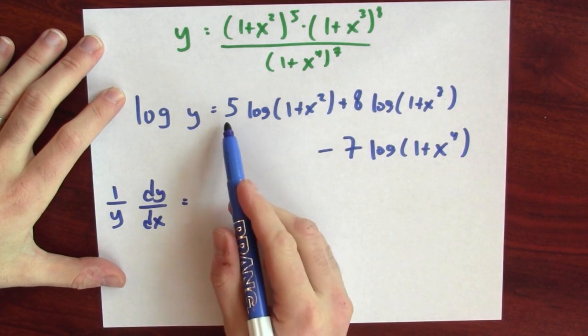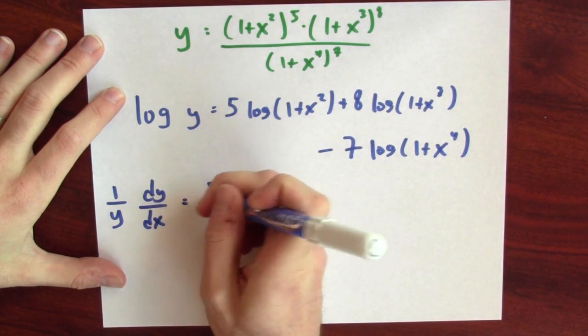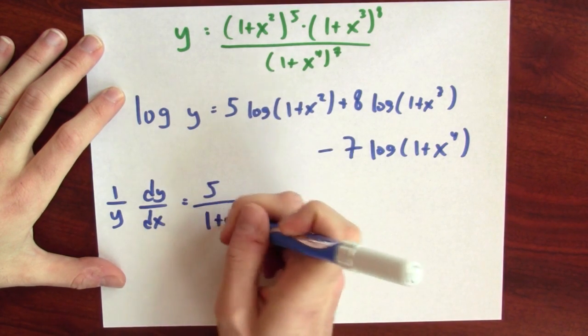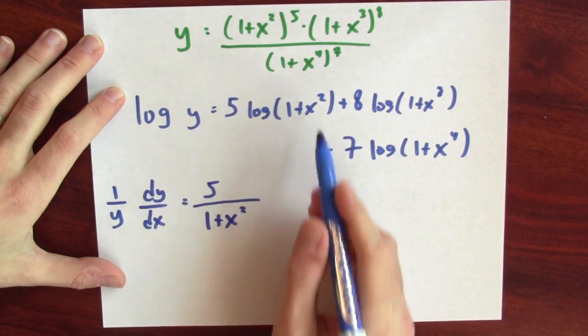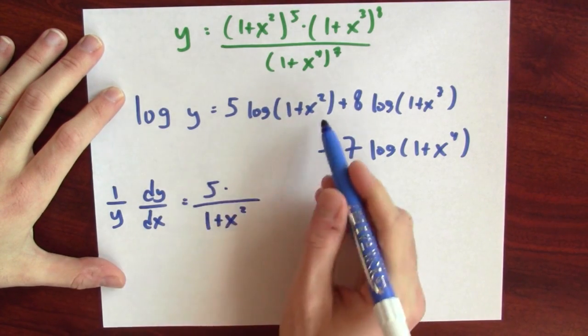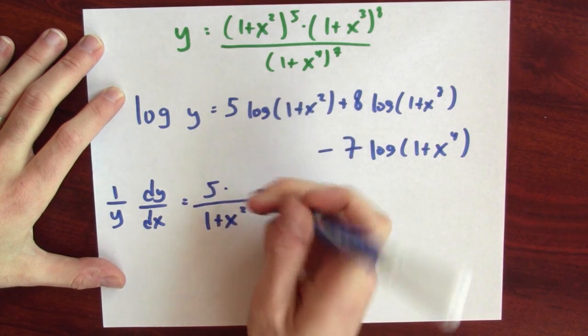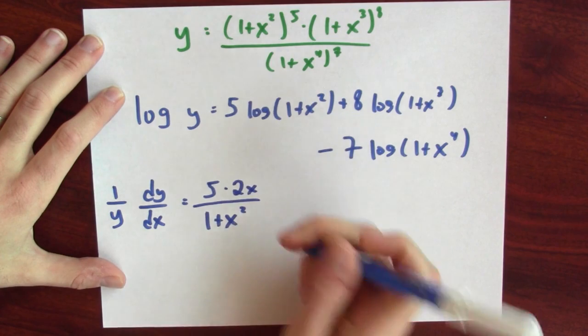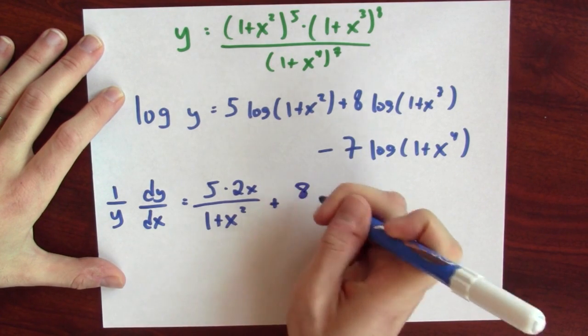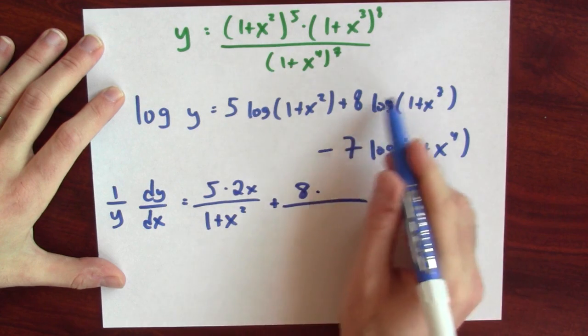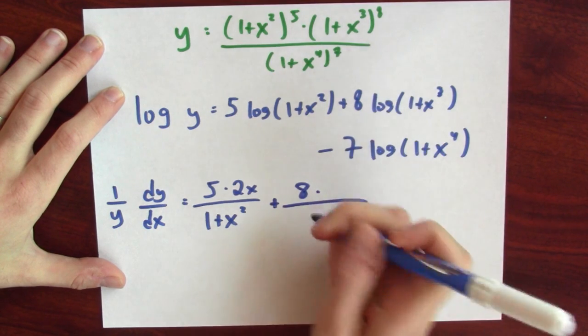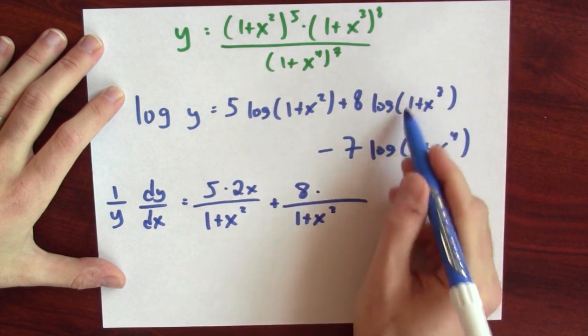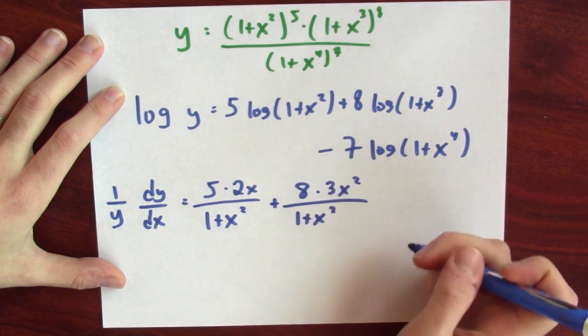Now I differentiate the other side. 5, well, I just multiply by 5. The derivative of log is 1 over, so 1 over the inside function, 1 + x², times the derivative of the inside function, which is 2x. Plus 8, and the derivative of log is 1 over the inside function, 1 + x³, times the derivative of this inside function, which is 3x².